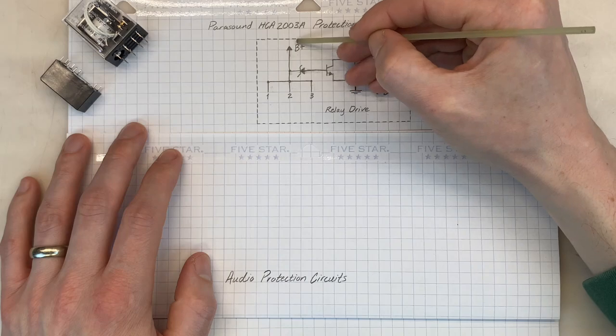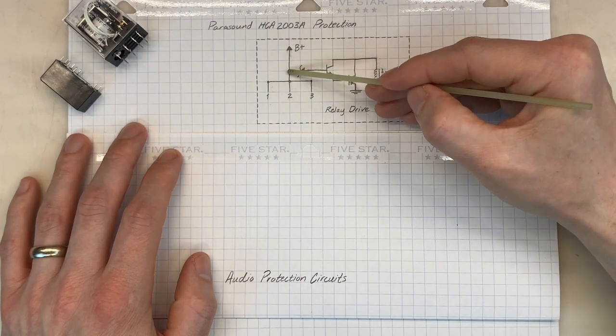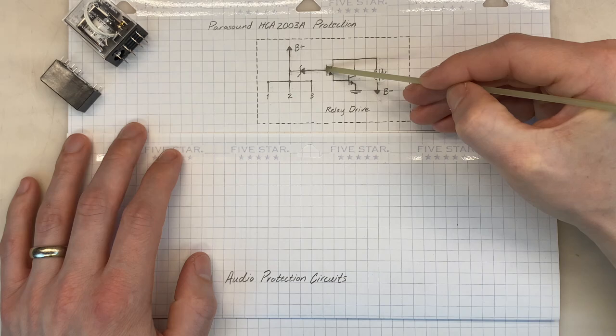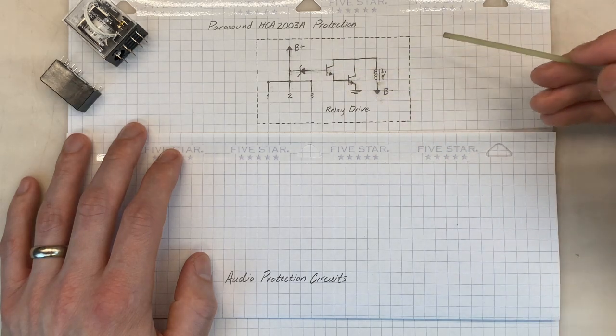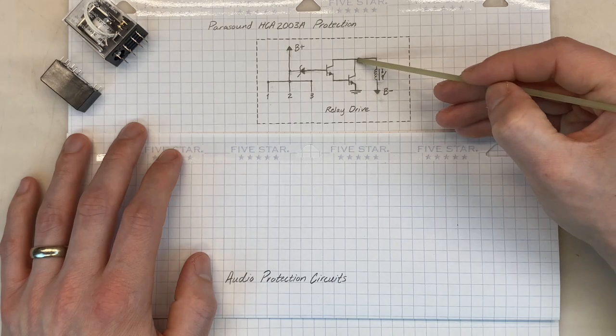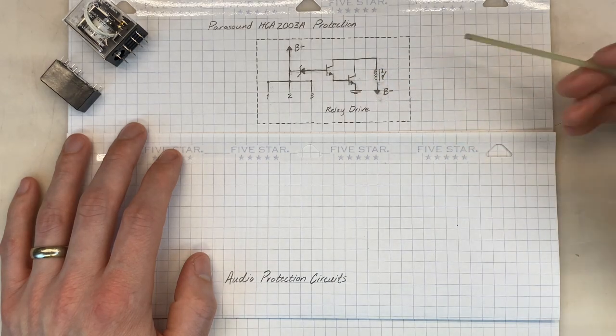To do that, we'll start with our positive supply rail, B+, up here. That will drop across this zener diode. We'll turn this transistor on, and we'll turn this transistor on. With this transistor on, current will flow from ground through the transistor through our relay to the B-, or negative supply rail, turning on the relay.